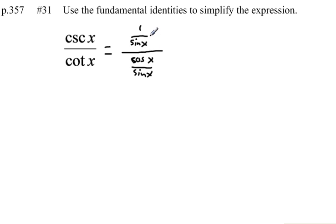Now once we do that, I notice that we've got two fractions here, and notice they're both over the sine of x. So if I multiply the top and bottom of this fraction by the sine of x, those sines will cancel out.